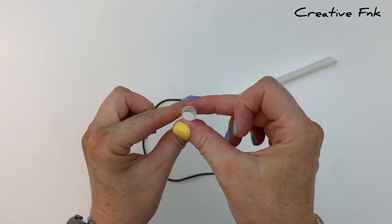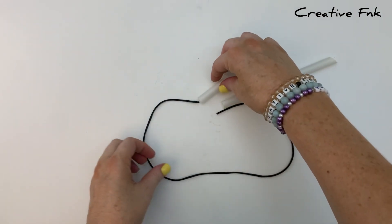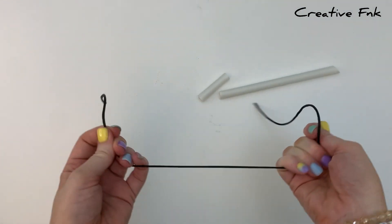So we just cut a little length about an inch or two long off the end of the straw and that's what we're going to use to wrap our thread around.